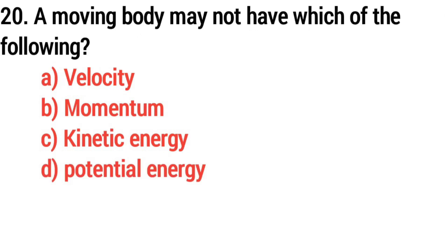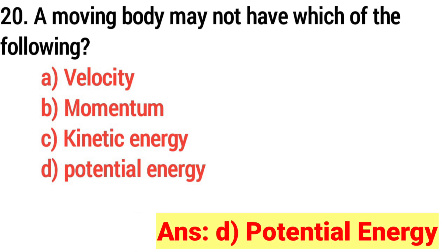Question number 20. A moving body may not have which of the following? Answer: Option D, Potential energy.